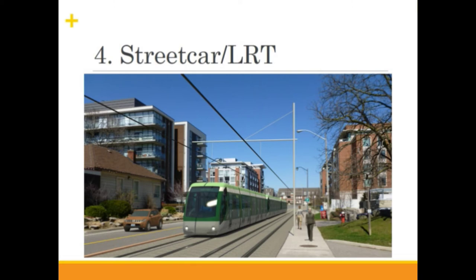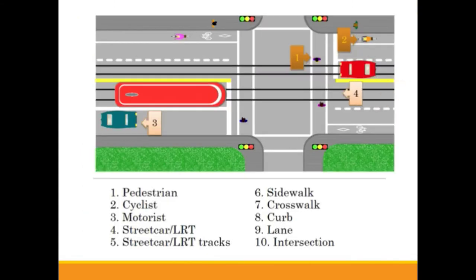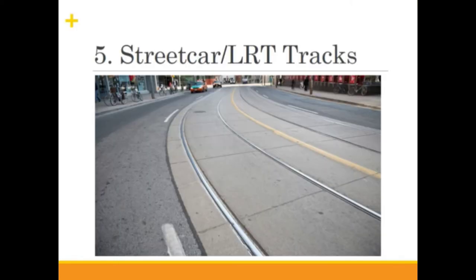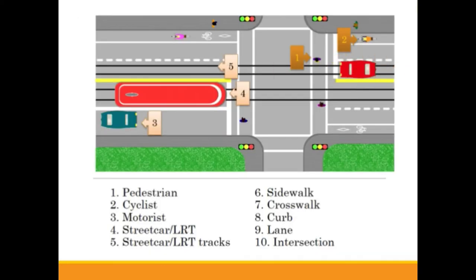Both types of vehicles run on metal tracks, similar to train tracks, and also use electricity from overhead wires. In our intersection example, we have labeled a streetcar, or it could be an LRT, noted at number four. The streetcar or LRT tracks are guiding metal tracks used by the vehicle, as discussed previously. These tracks are permanent in the ground and are generally used to give the vehicle their own lane or right-of-way. You can see the streetcar or LRT tracks noted here at number five.